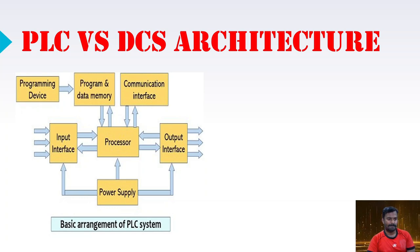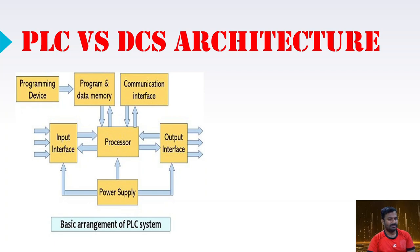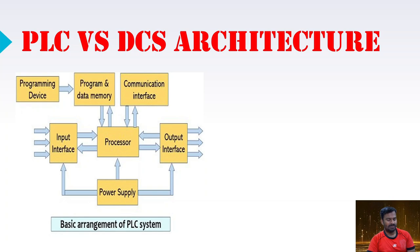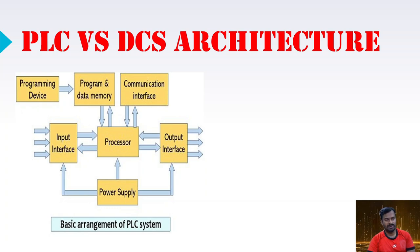The PLC has memory to store the program and execute data, and it has communication capability to connect to field devices like VFDs and other controllers. The input interface connects to field devices like sensors — analog sensors connect through an analog-to-digital converter before data reaches the processor, while digital signals are also conditioned to readable voltage and current levels before going to the processor.